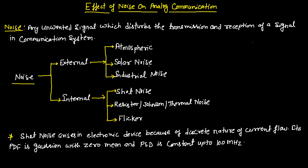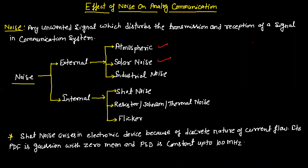Basically, there are six types of noise: atmospheric noise, solar noise, industrial noise, shot noise, Johnson (thermal) noise, and flicker noise.